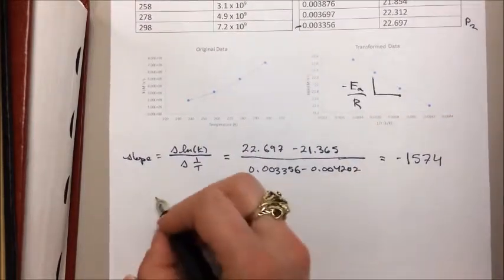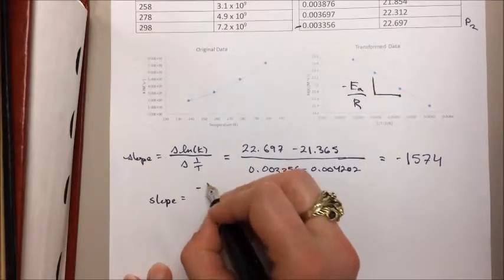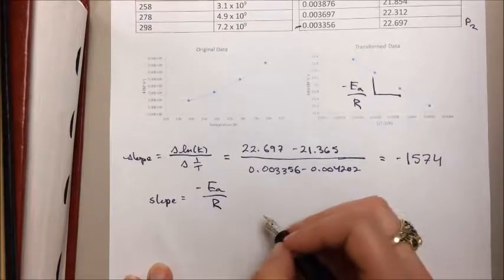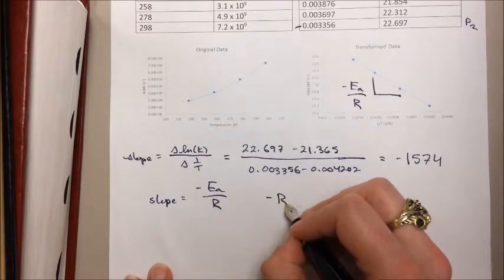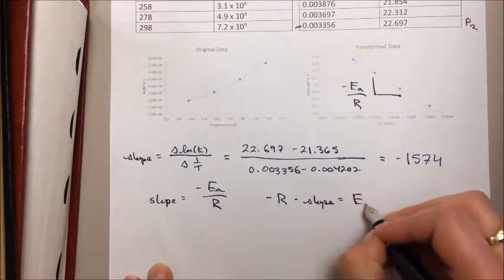So I know from this that the slope equals negative activation energy over R. Now if I multiply both sides by negative R, I get negative R times slope equals activation energy.